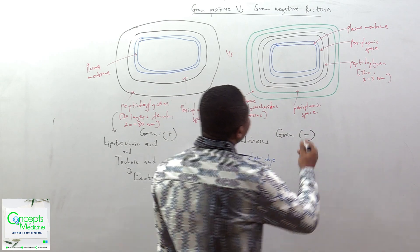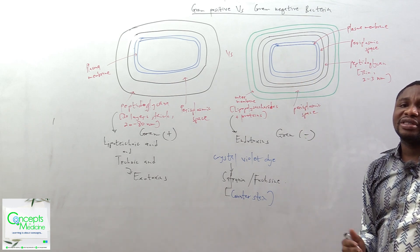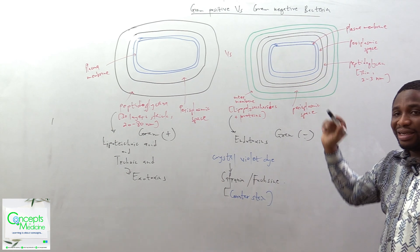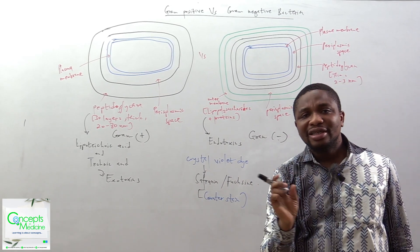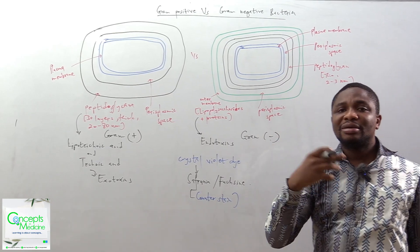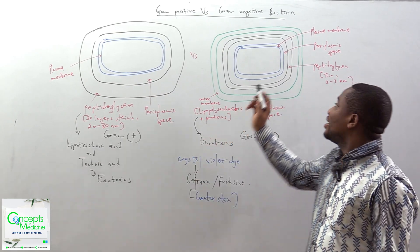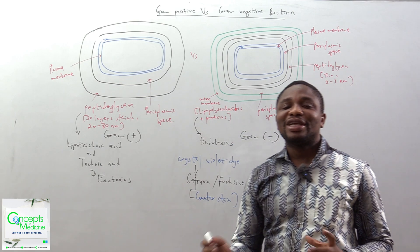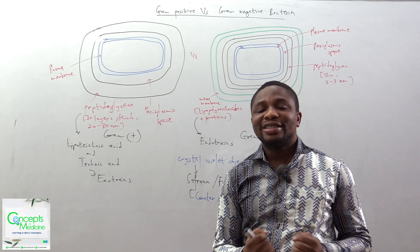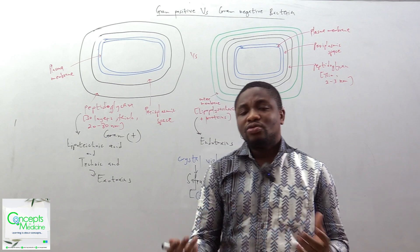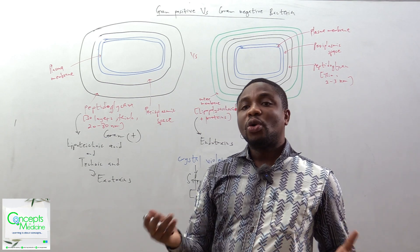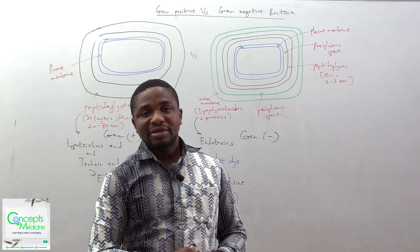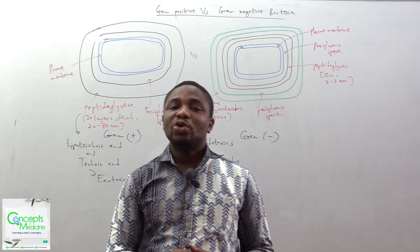Now let's look at the gram-negative bacteria. The composition of the wall is a bit different. You have the plasma membrane followed by the periplasmic space, then a very thin layer of peptidoglycan — about 2 to 3 nanometers in thickness. After that thin peptidoglycan layer, you have another periplasmic space, then followed by the outer membrane. The outer membrane contains lipopolysaccharides and proteins. The lipopolysaccharides are released on their own or when the bacteria undergoes bacteriolysis from antibiotics, and that we call endotoxin — meaning the gram-negative bacteria produces endotoxins.